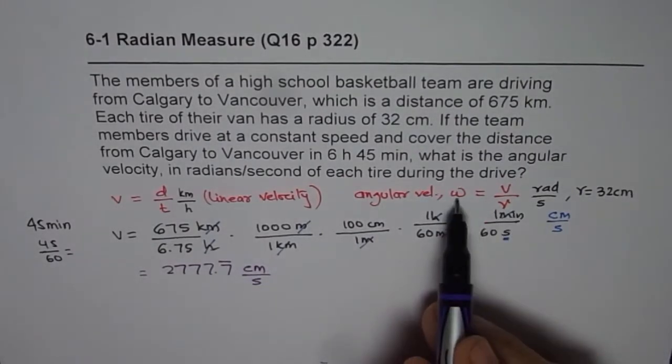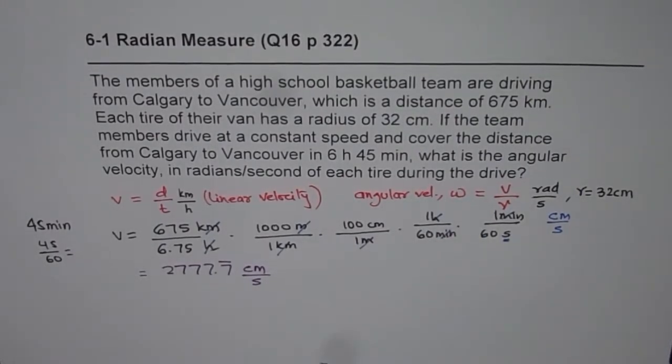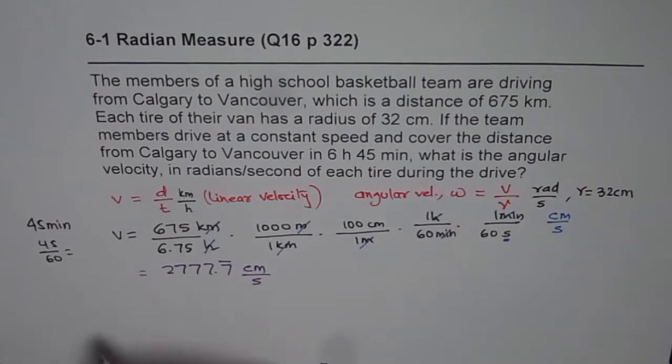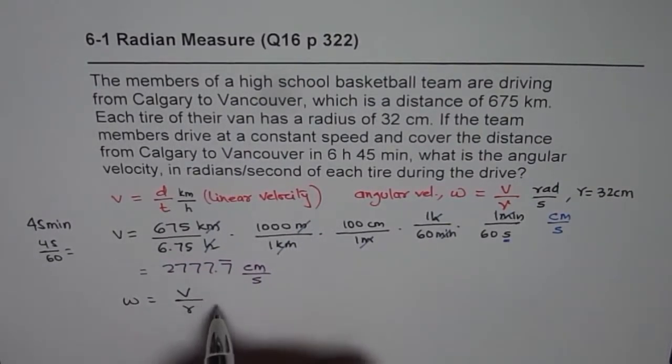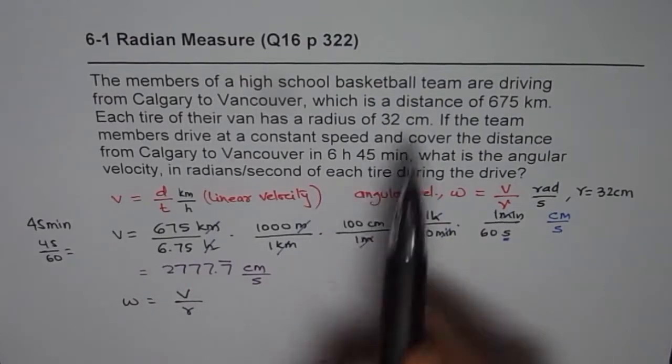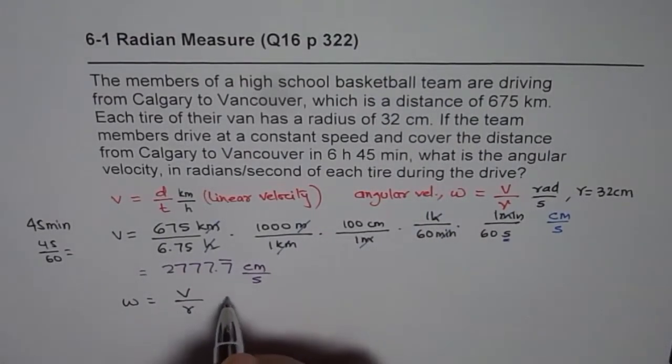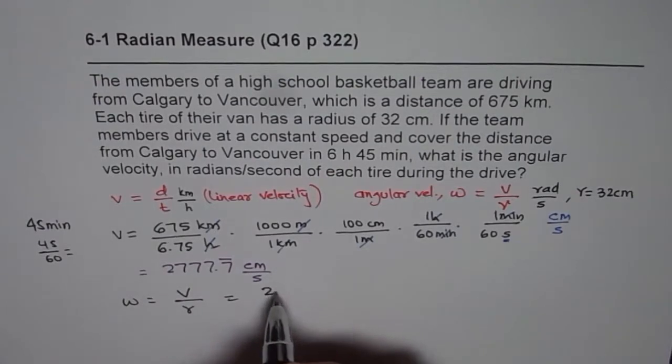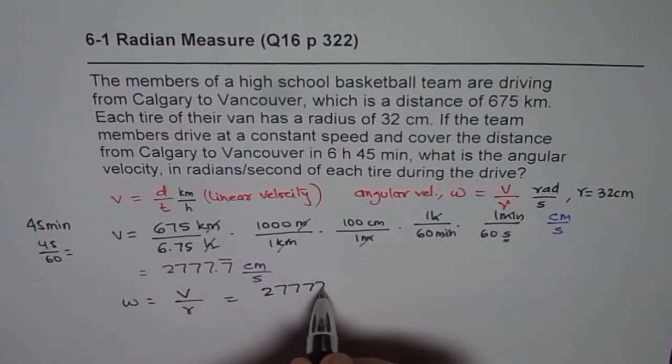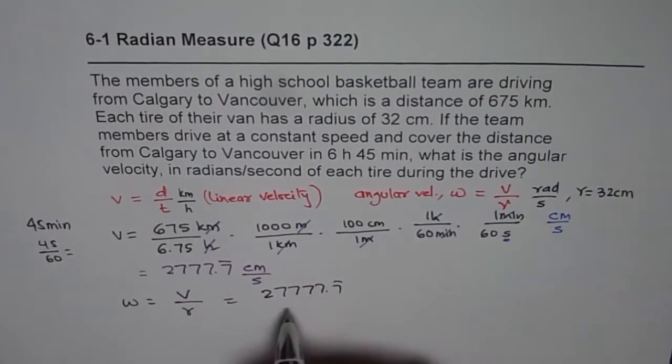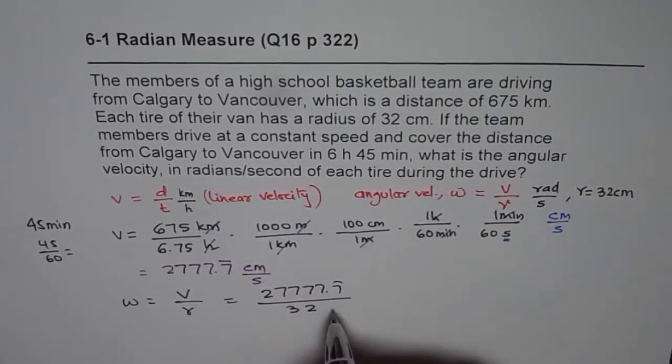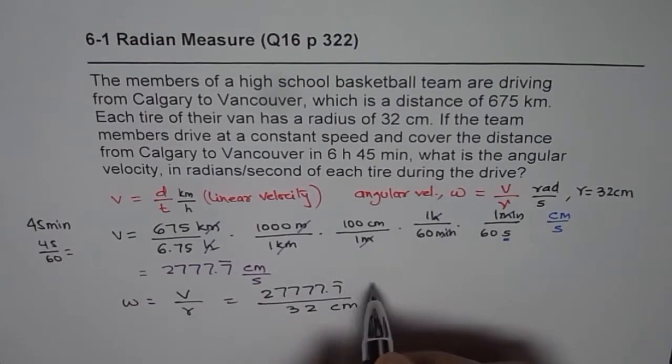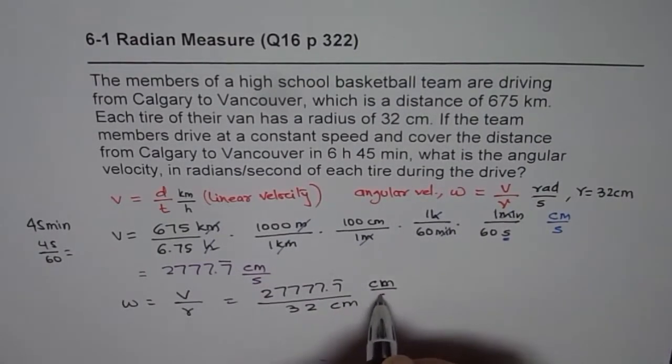Now we need to find the angular velocity. Angular velocity, as I said, is linear velocity divided by the radius. We are given radius equals 32 centimeters. Linear velocity we calculated as 2777 recurring 7 divided by 32 centimeters. This is in centimeters per second.